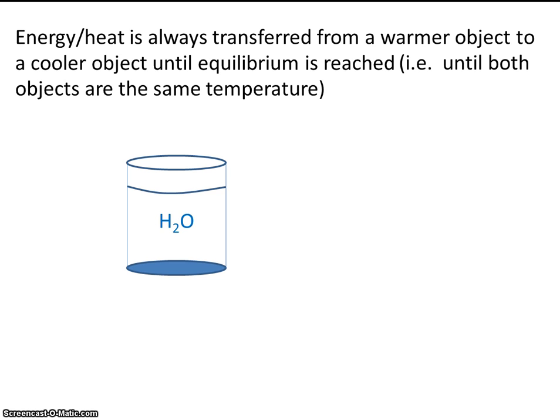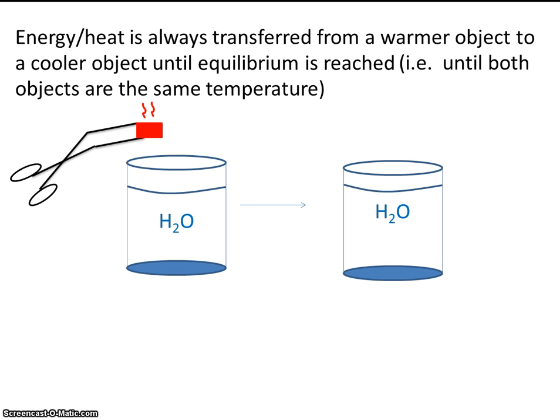So let's say we have a beaker and it's got water inside. What we're going to do is we're going to add a hot piece of metal to the water. Now we just learned that energy flows from a warm object to a cool object until they both reach the same temperature.